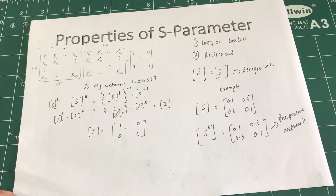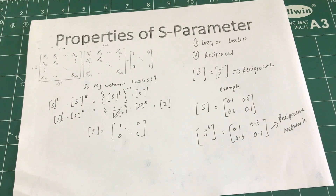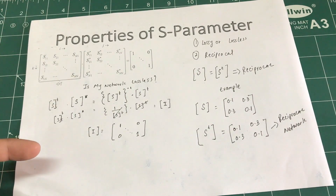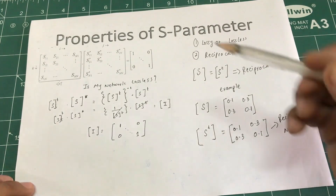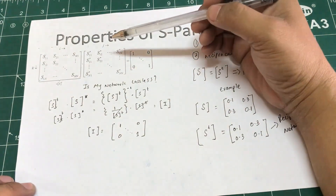So the first property is reciprocal, the second property is lossless, and this is how you check losslessness. Let's take an example on this.